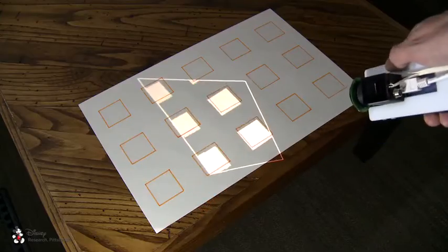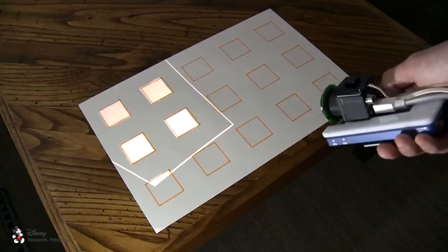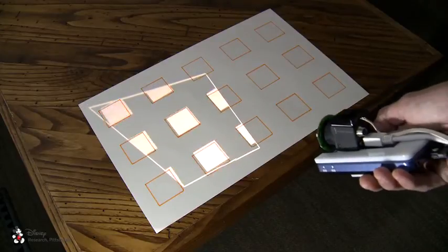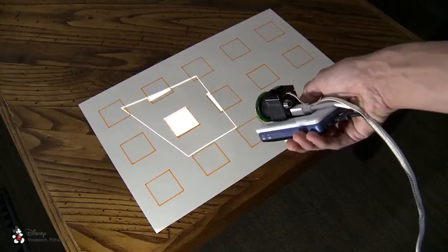The Hideout system supports real-time tracking and alignment of projected imagery. Here we project white squares back onto the hidden markers shown with orange borders drawn on paper.